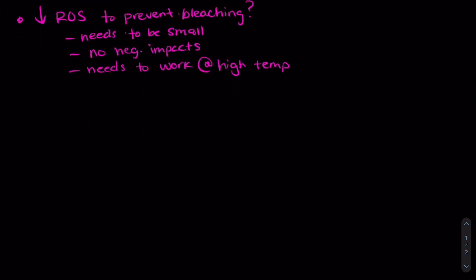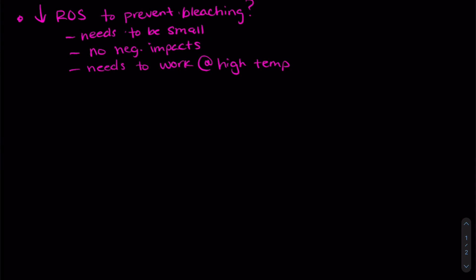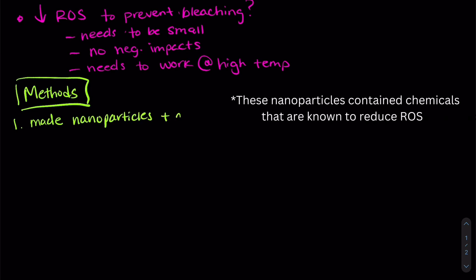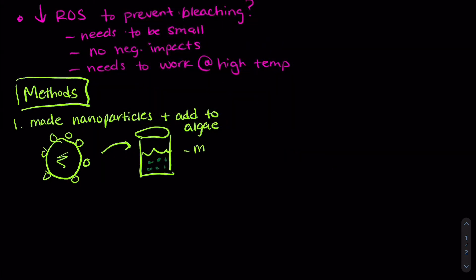So what did our researchers actually do? Let's get into our methods. So the first thing they did was they made some small delivery vehicles. So they made nanoparticles. And they added them to algae to make sure that the algae survived. So they have these nanoparticles, they've got some polymers on the outside to make them easier to work with, and they added them to a beaker full of algae. And then what they did was they measured growth over 25 days.